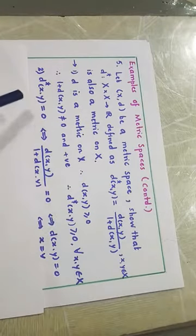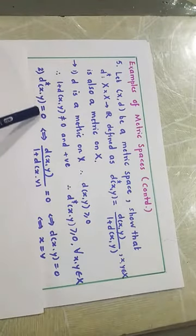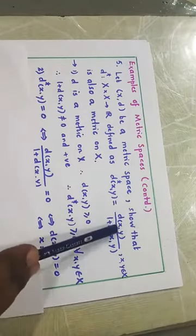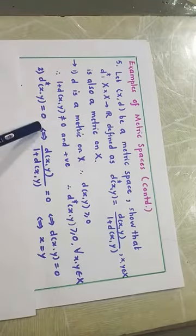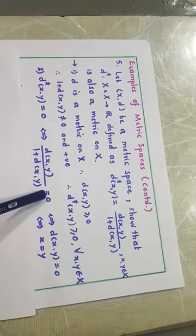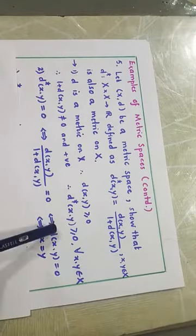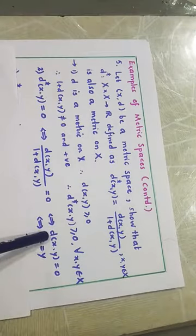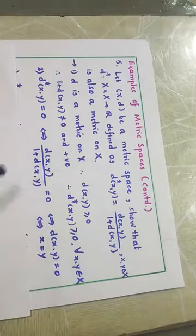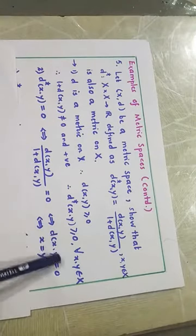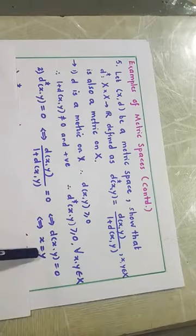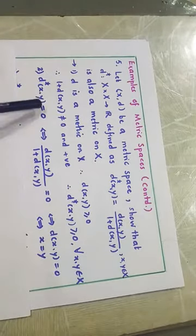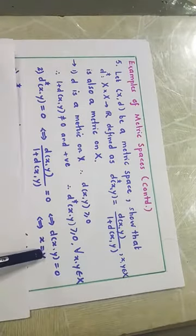Second condition: if D*(x,y) = 0, then by definition D/(1+D) = 0, which holds if and only if the numerator is 0, meaning D(x,y) = 0. But D is a metric, so D(x,y) = 0 if and only if x = y. Thus D*(x,y) = 0 if and only if x = y. This proves the second condition.